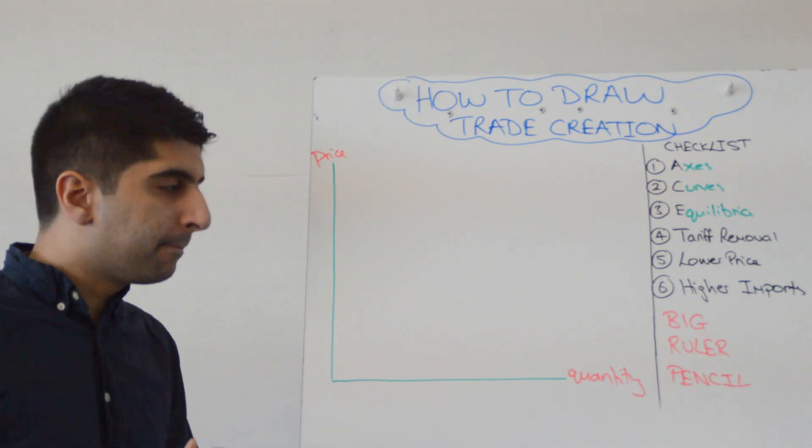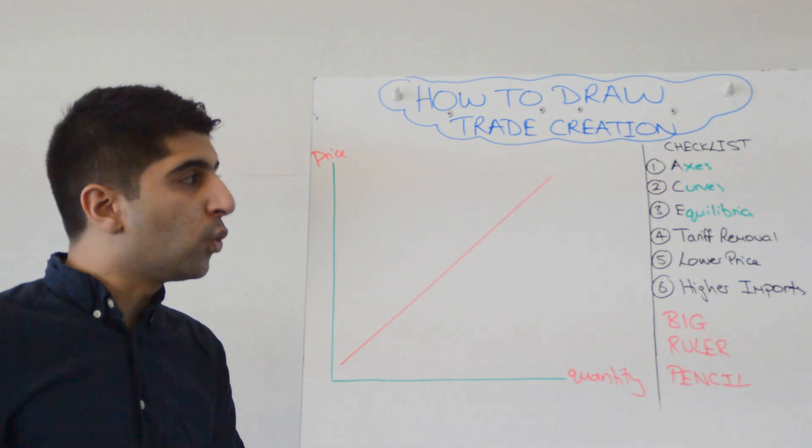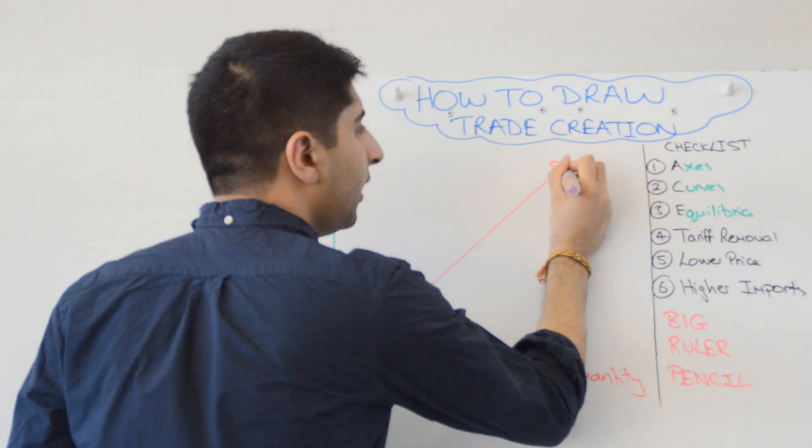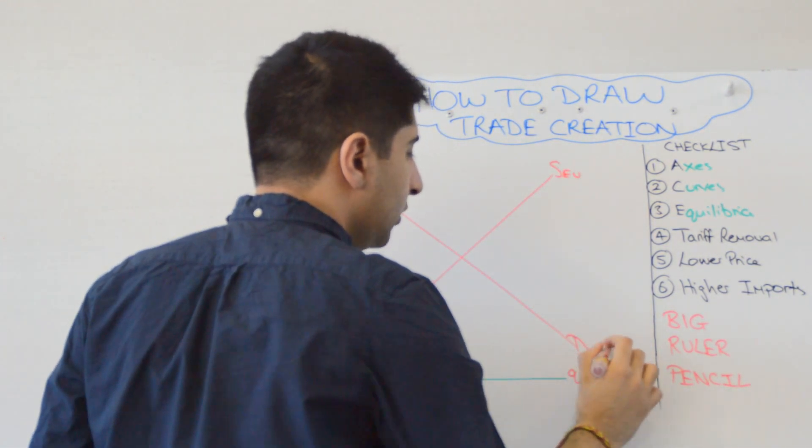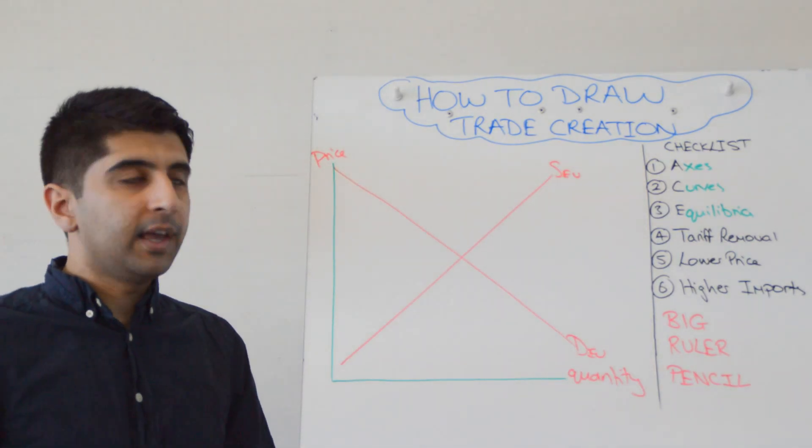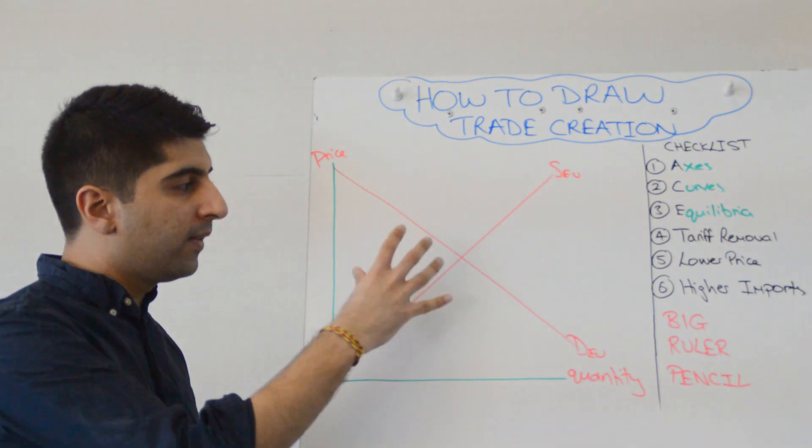Now we need to draw our market. And the market we're going to draw is an EU market. So we're going to have supply EU and demand EU. This we are assuming is a market within a customs union. The EU is a customs union. We're in that market.